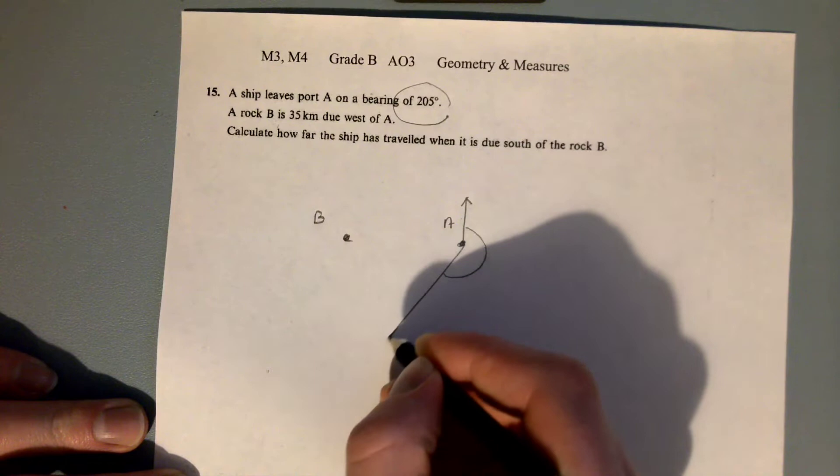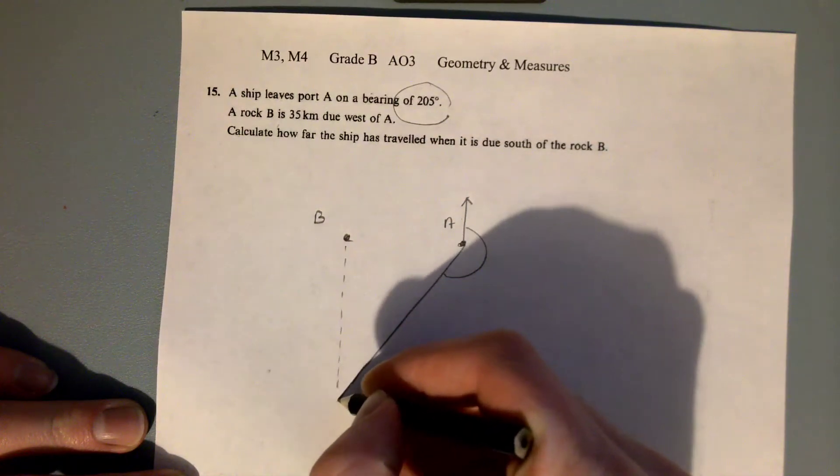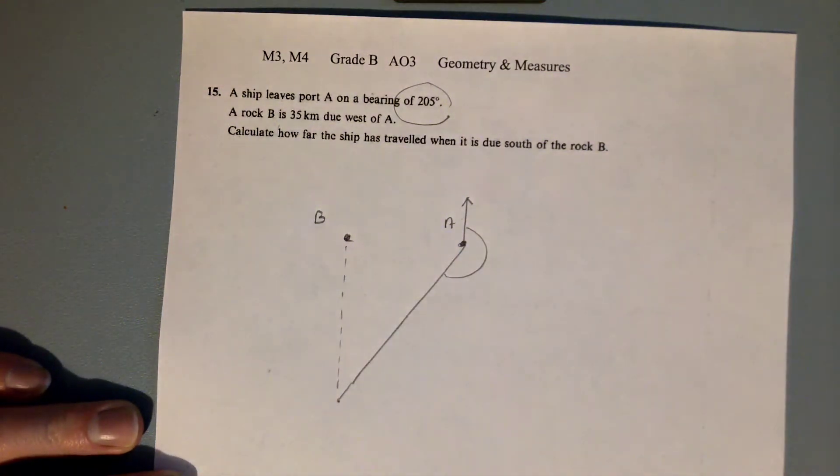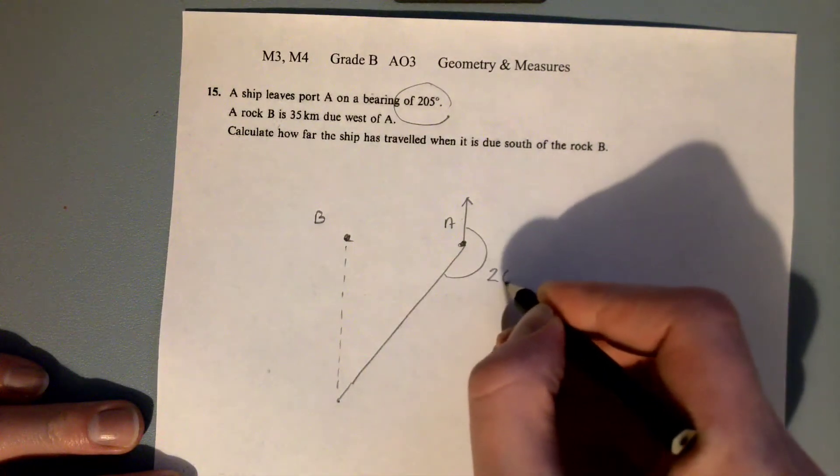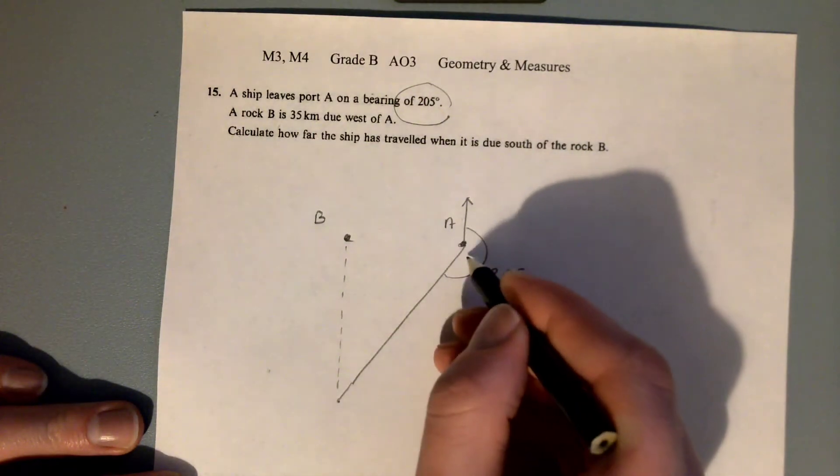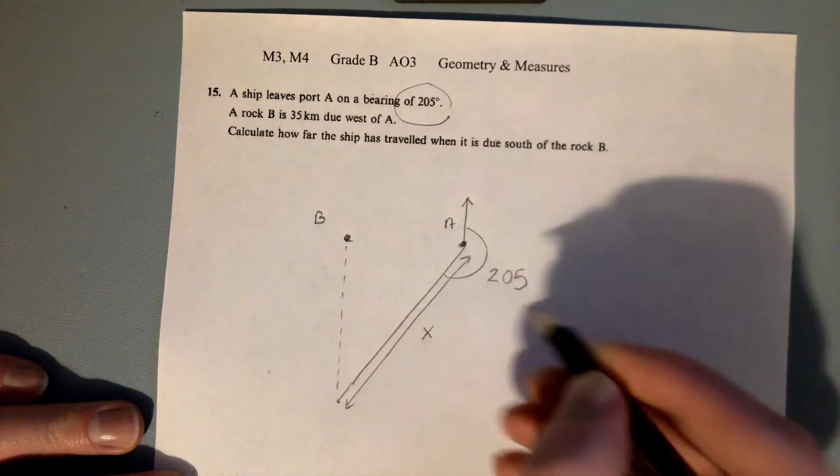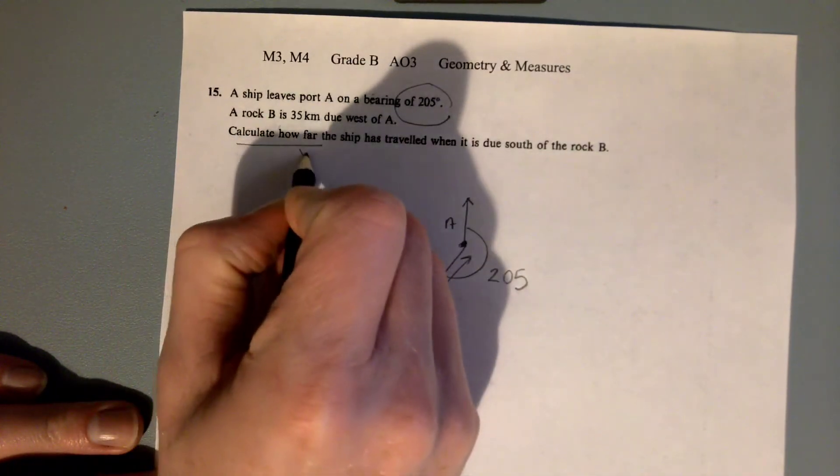We want to see how far that ship is going to travel so that it is directly below B, due south of B. So what the question is asking us is what is that distance that we've just drawn from A down so that we end up due south of B. What's that distance x?